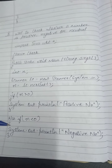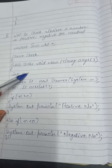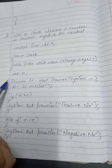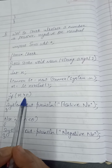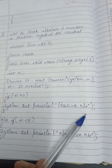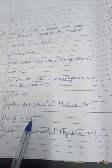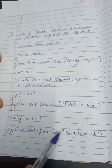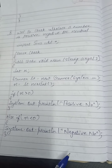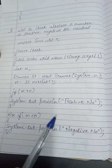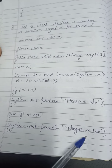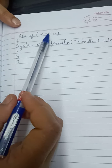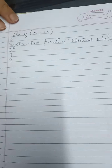Now for the else-if example: declare variable n using Scanner — sc = new Scanner(System.in), n = sc.nextInt(). If n is greater than zero, the number is positive. This is based on the concept of the number line: numbers greater than zero are positive, numbers less than zero are negative. If n equals 0, it's a neutral number.